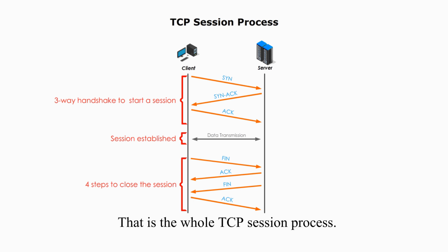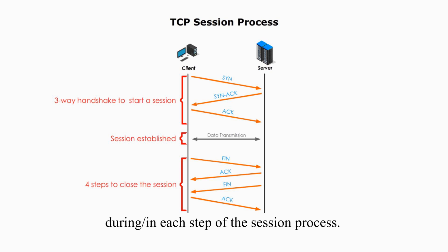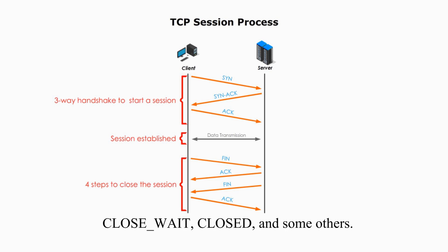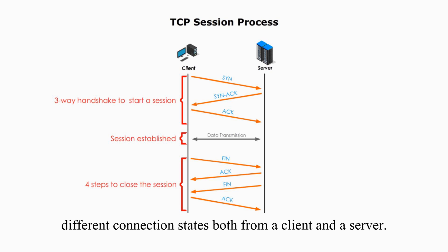That's the whole TCP session process. A state indicates a specific connection status during each step of the session process. The possible states include LISTEN, ESTABLISHED, CLOSE-WAIT, CLOSED, and some others. I will use the TCP session process to show different connection states, both from the client and from the server.